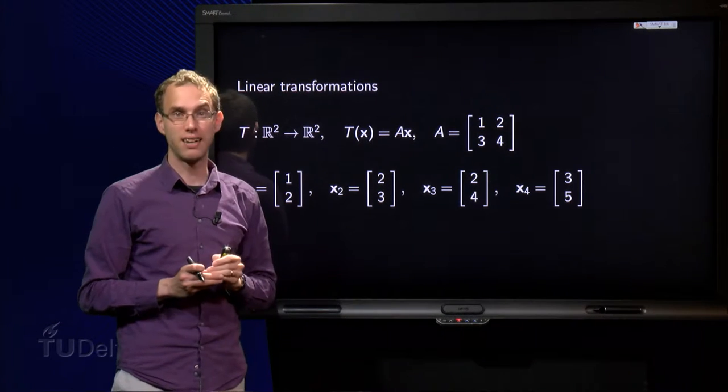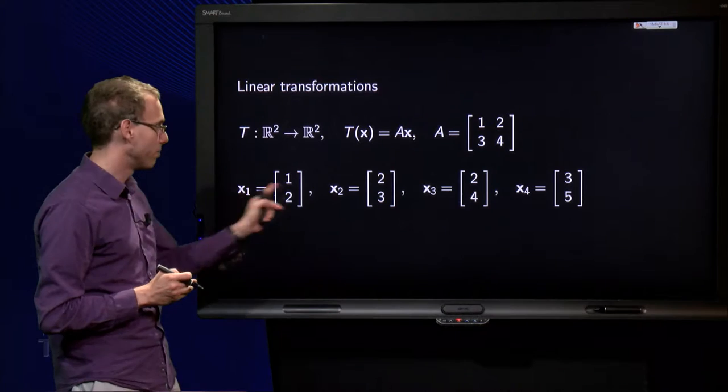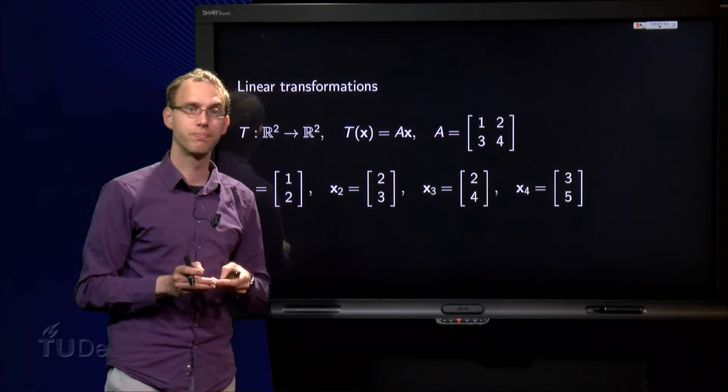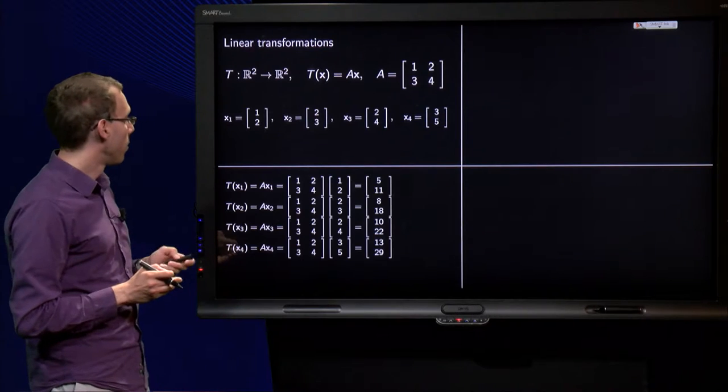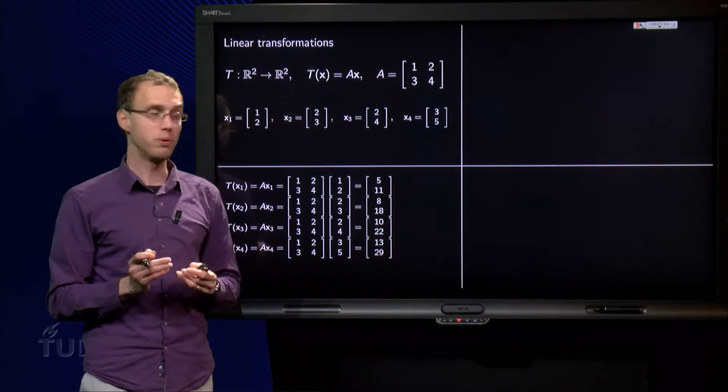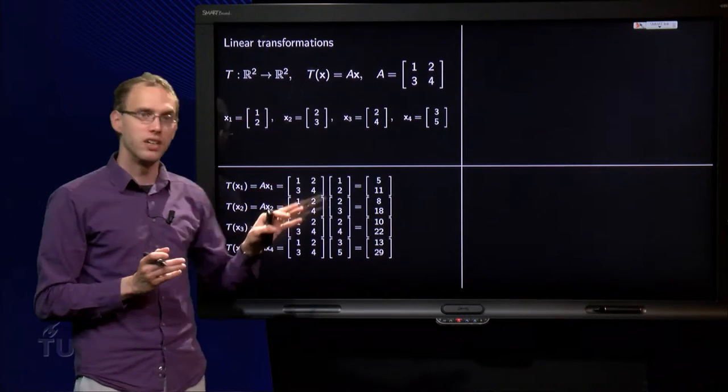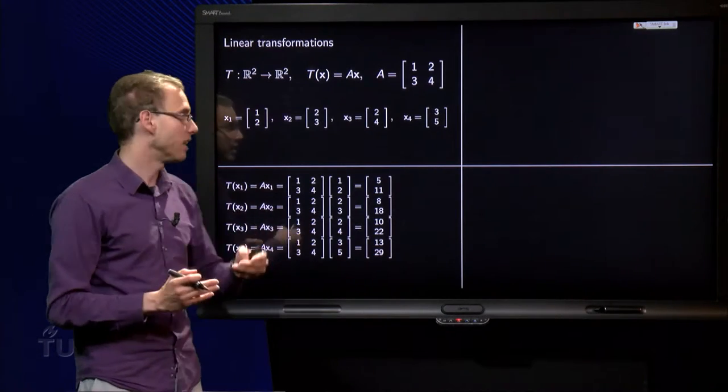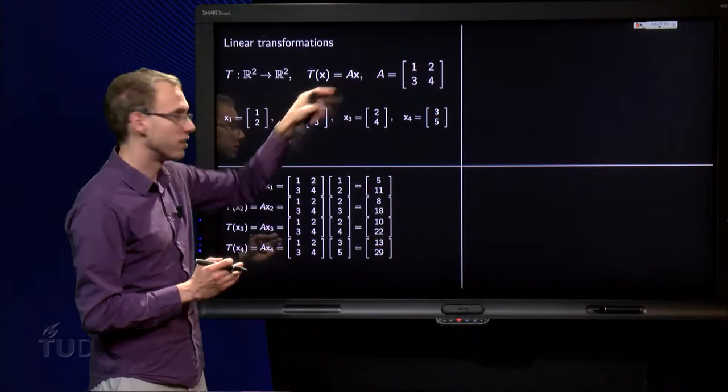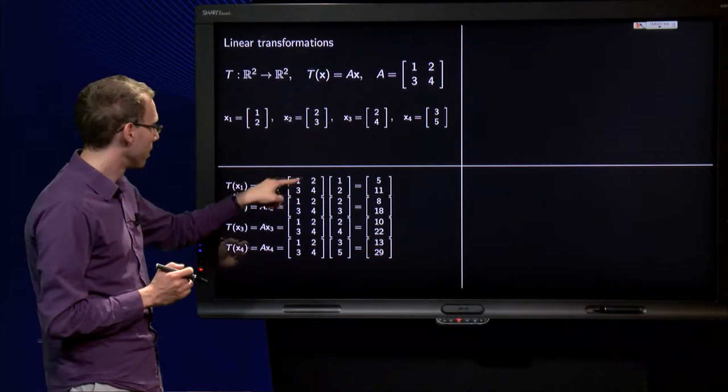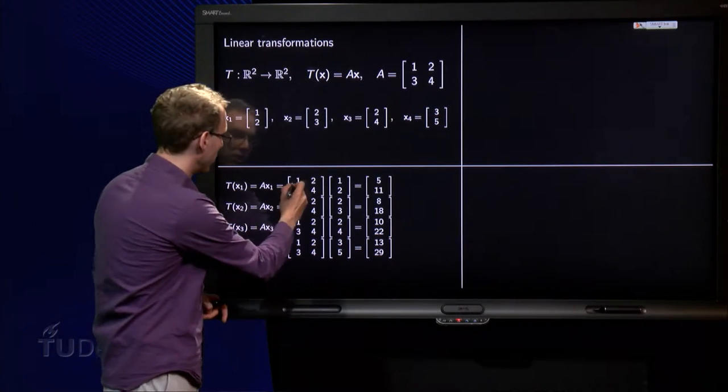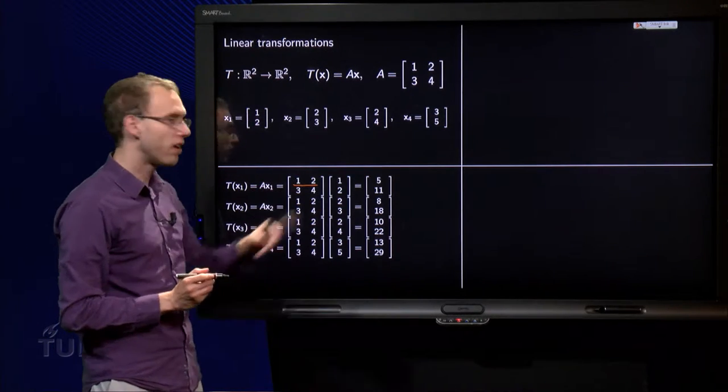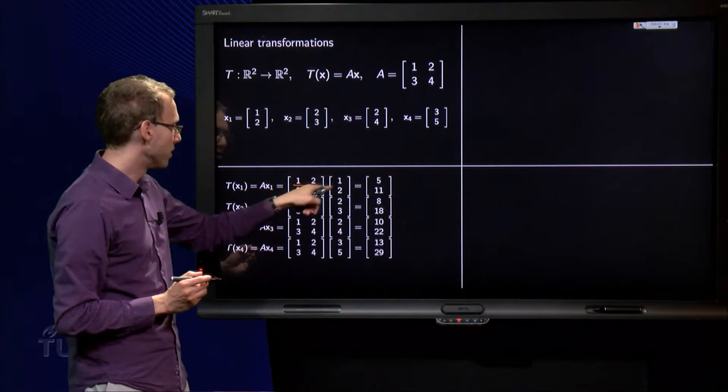And we take several vectors x, x1 to x4, and wonder what happens with T of x. Well, we know how to compute them, just need the results. T of x1 equals A times x1, because T of x equals A times x. So use the row-column rule: 1 plus 4 equals 5, and 3 plus 8 equals 11.